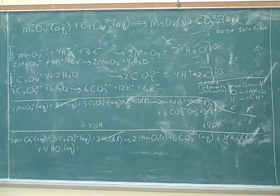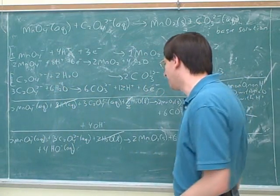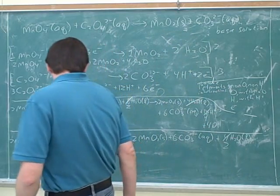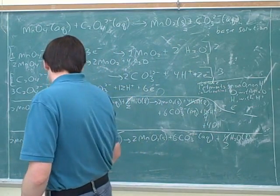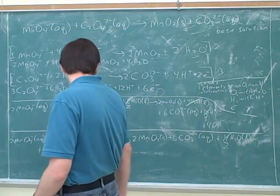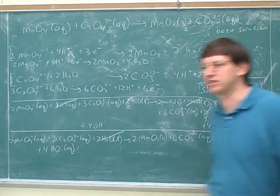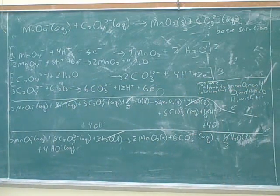Alright, now I think we're done, although now again it would be good to check that all the elements balance and all the charges balance. For example, two manganeses on the left, two manganeses on the right. What's our total charge here on the left? Negative two, minus six is negative eight, minus four is negative twelve. And this is a negative twelve charge on the right-hand side as well. So it looks like things are balancing, but you want to check everything.